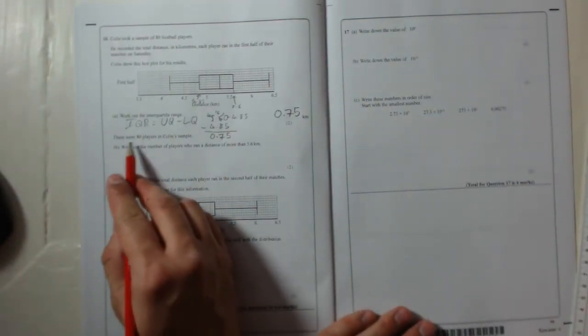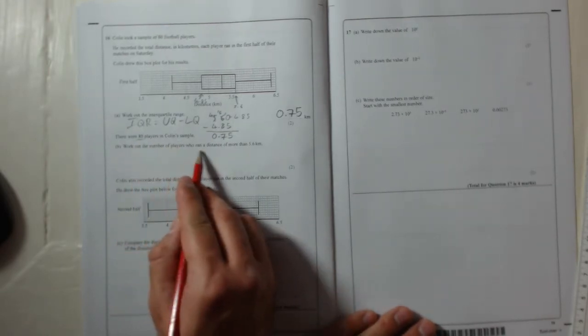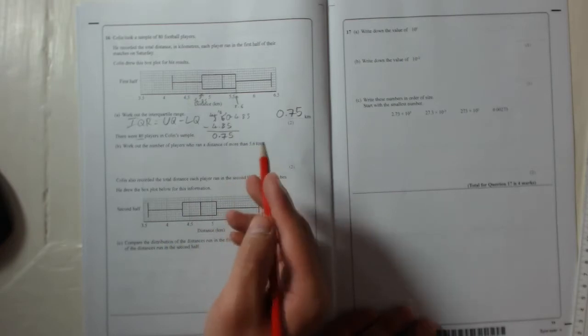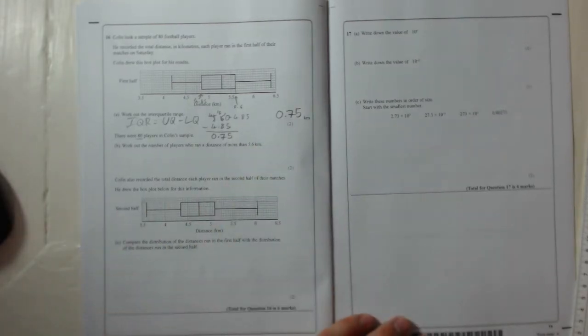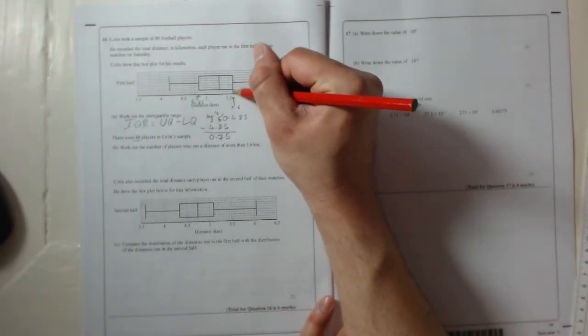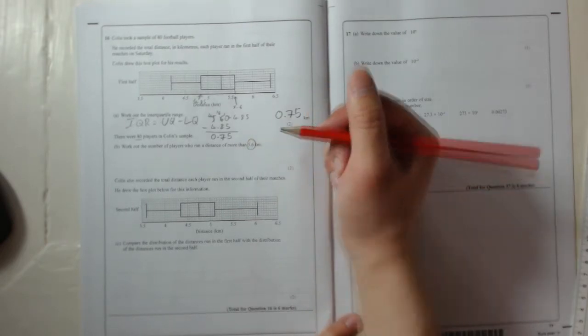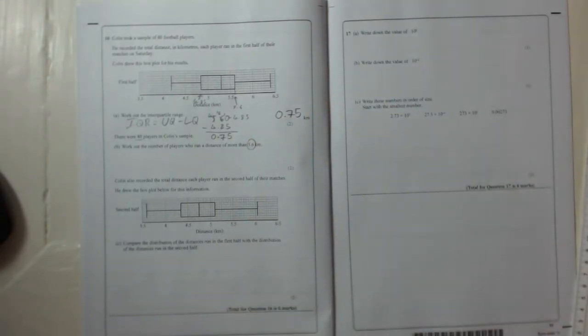Part B: There were 80 players in Colin's sample. Work out the number of players who ran a distance of more than 5.6 kilometres. Now this question seems like it might be really hard, but actually if you look here, we know the upper quartile is 5.6.